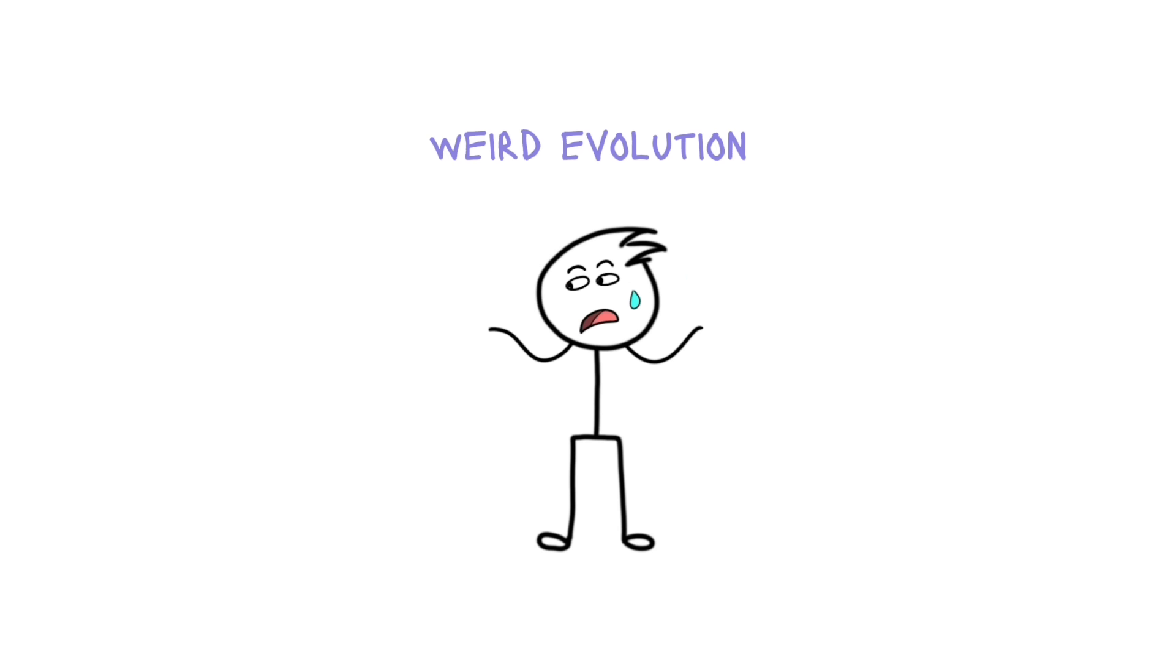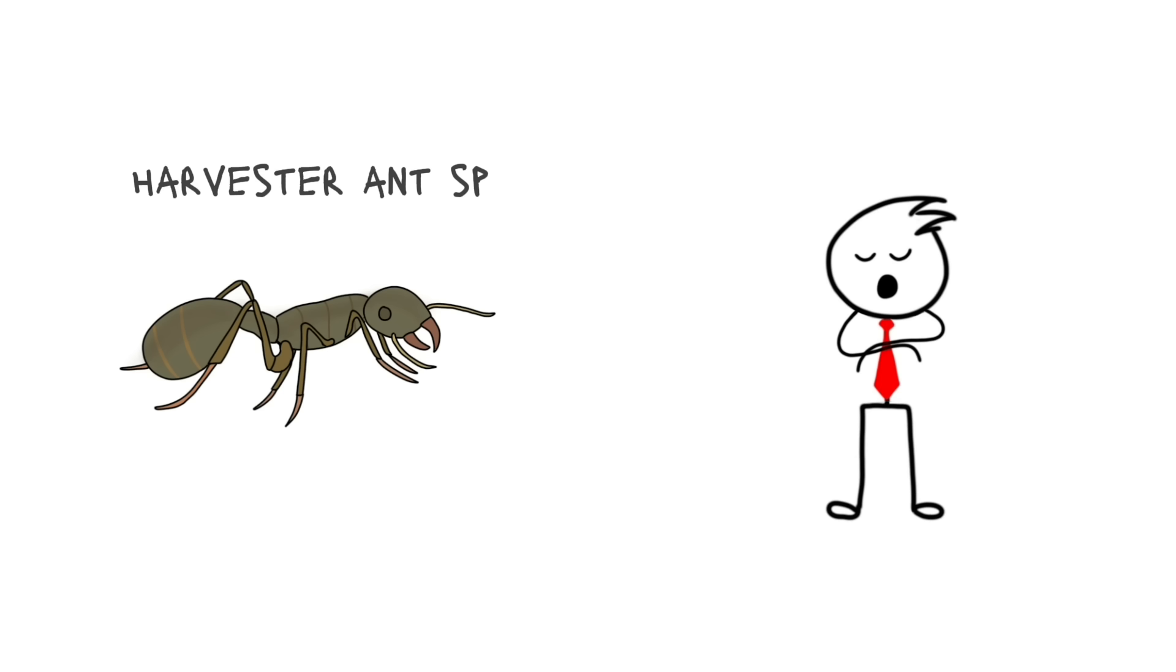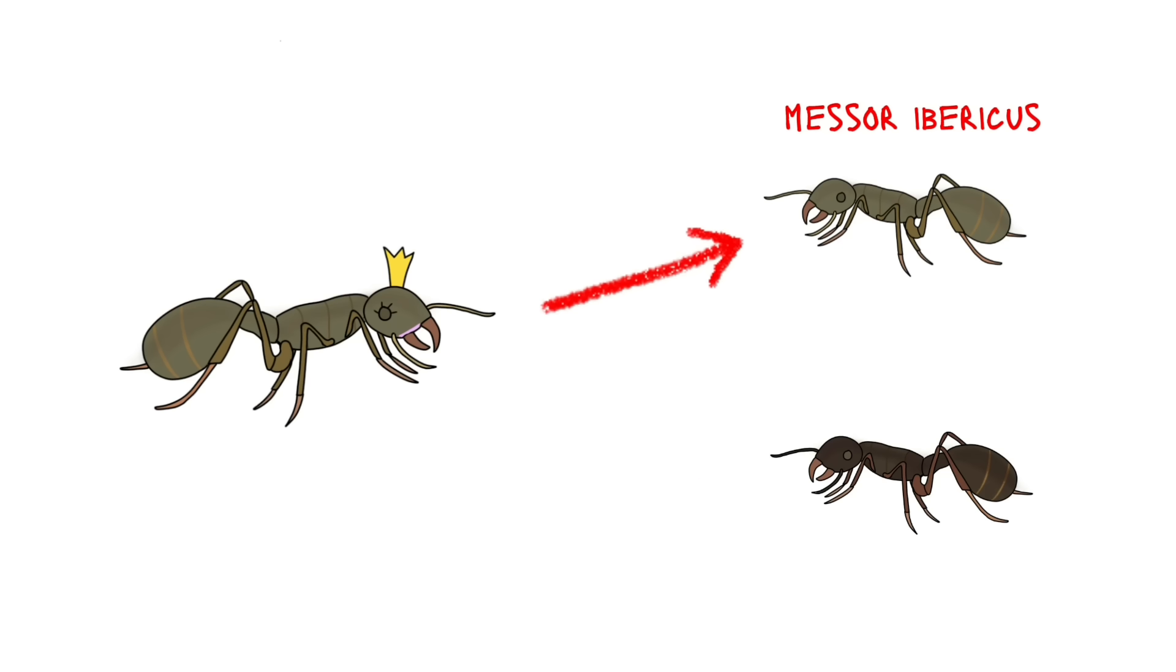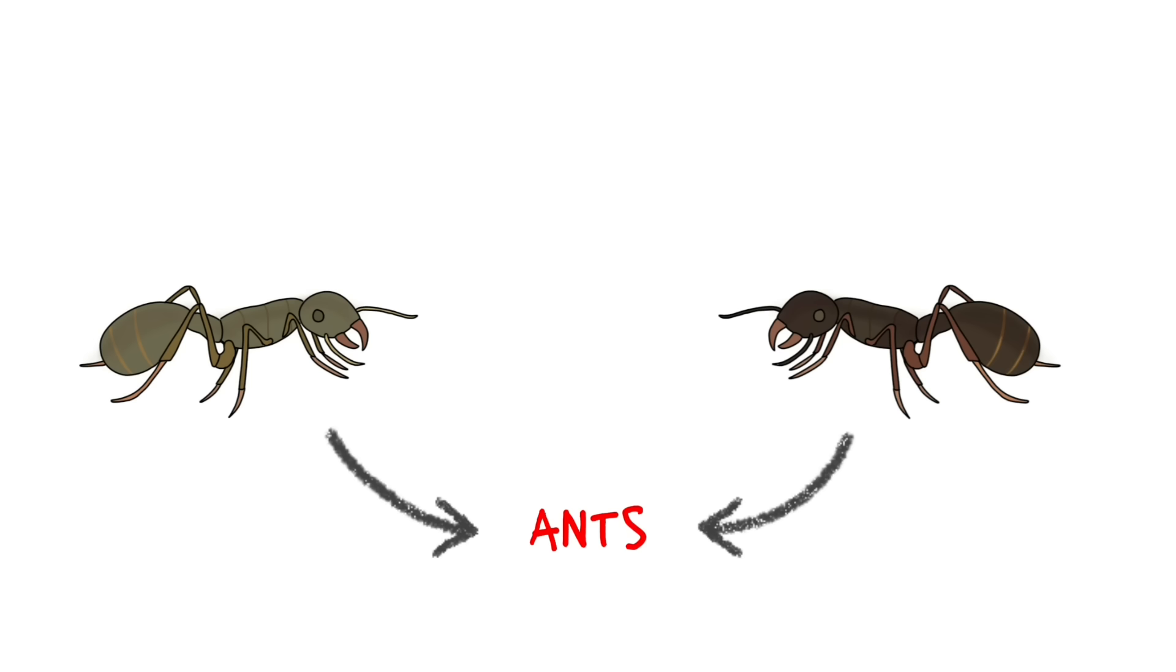But the most weird evolution is for this harvester ant species, Mesor ibericus. The female in this species can give birth to two different ant species. One, their own species, and one belonging to Mesor structur. If you think since both are ants, what's the big deal? Well, they are as different as we humans are to chimps. And I will explain that in another ants mating video.